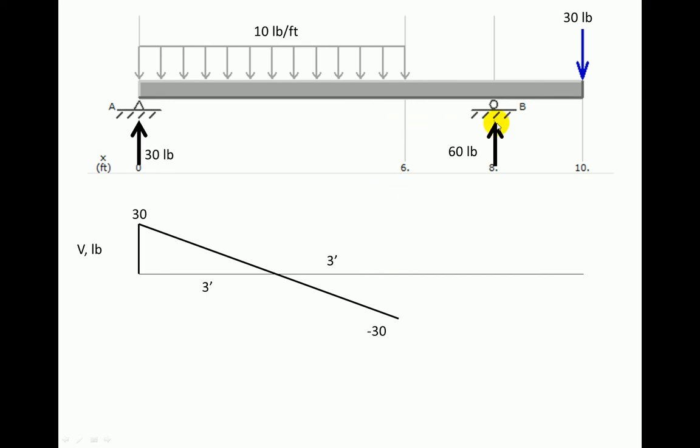To move on from 6 feet over to B, there's nothing going on. Anytime there's no distributed load, it means that the slope of the shear diagram is going to be 0. So we just come flat across for those 2 feet. Now we're at another concentrated force, the reaction force, 60 pounds up, and so we take a 60-pound upward step. We were at minus 30, and that brings us back to positive 30.